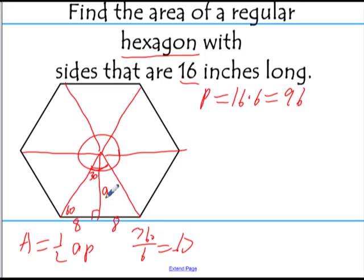8 is the short leg, A is the long leg, so that's going to be 8 rad 3. And so, our apothem is 8 rad 3.